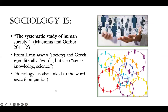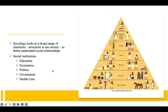Sociology is basically the systematic study of human society. It came from the Latin word 'societas,' which means society, and 'logos' in Greek literally means world — so in a way that is the social world. Sociology is also linked to the word 'socius,' which means companion, so it's about relationships. When we think about sociology, we are thinking about all aspects of society — starting from the individual, then groups, then the larger society as a whole.